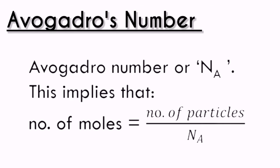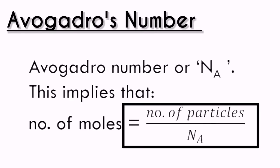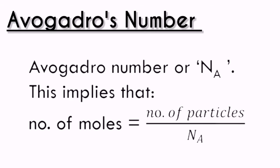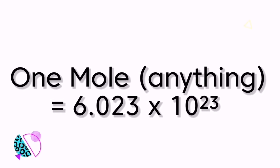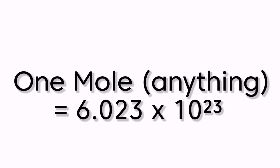This implies that the number of moles equals the number of particles divided by the Avogadro number. It means that one mole of something has 6.023 × 10²³ particles.